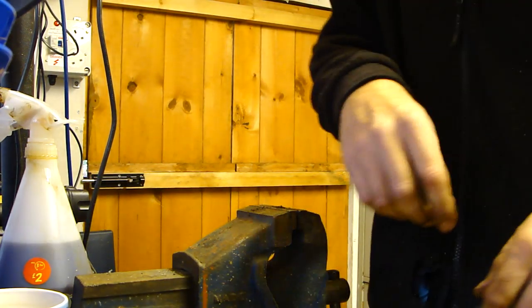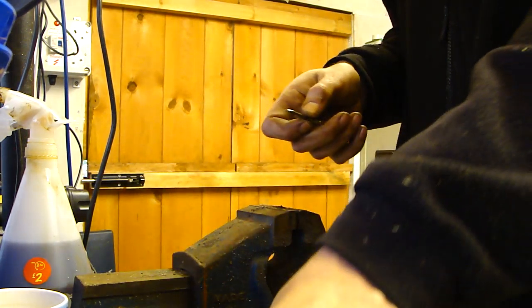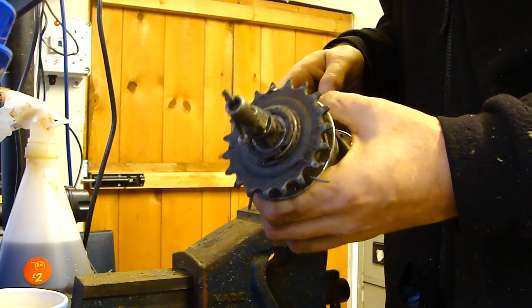Alright, what we're going to do is try and strip the Sturmey Archer hub. This one's already been taken off the wheel obviously.